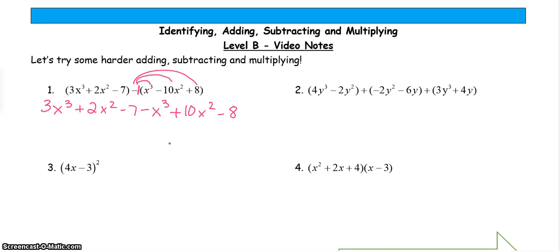Now that I've done that, all I have to do is combine like terms. So I've got 3x³ and -x³, which makes 2x³. I've got 2x² + 10x², which gives me 12x². Then I've got -7 - 8, which gives me -15.